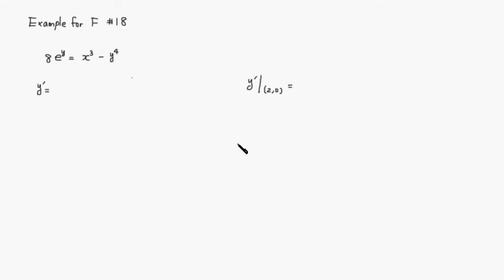Alright, so let's go over an example for final exam number 8. What we want to do is find y prime, or dy over dx, using implicit differentiation. So let's do that.